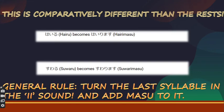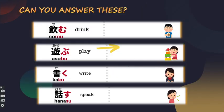The general rule for group 1 is: turn the last syllable u into i, then add masu. So 'hairu' — change u to i, it becomes 'hairi,' then add masu: 'hairimasu.' 'Suwaru' — u becomes i: 'suwarimasu.' Try 'nomu': change the last u to i, it becomes 'nomi,' add masu: 'nomimasu.' Nomimasu means 'to drink.'